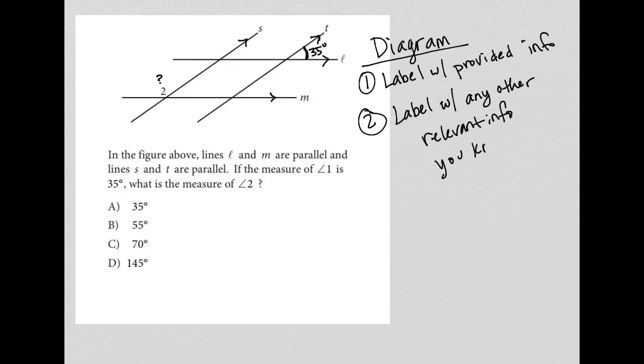So in this case, right, we know that we have two parallel lines in L and M, another set of parallel lines in S and T. We know that angle 1 is 35. So what else do we know, right? What's the other, what's that any other relevant information?